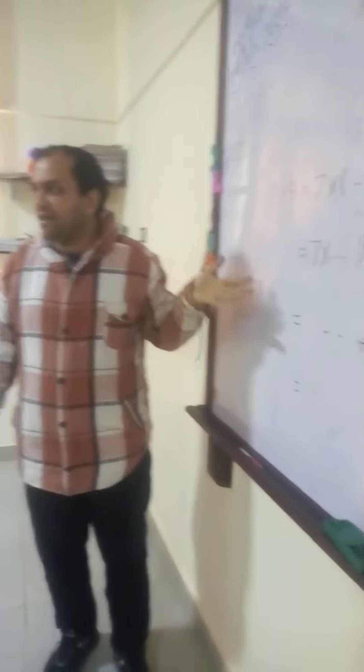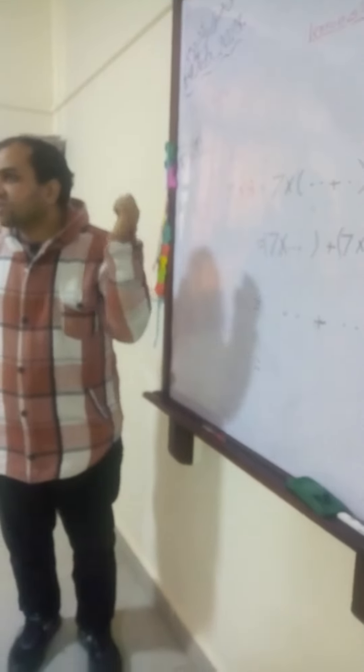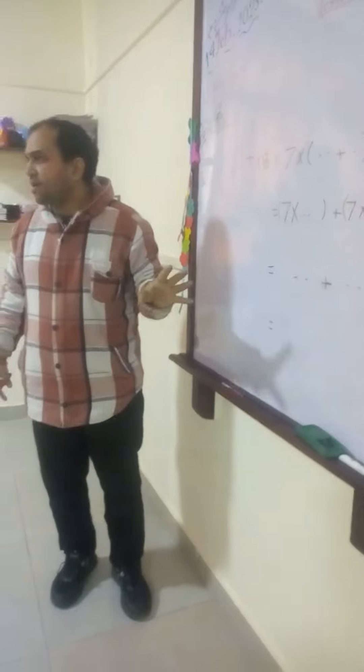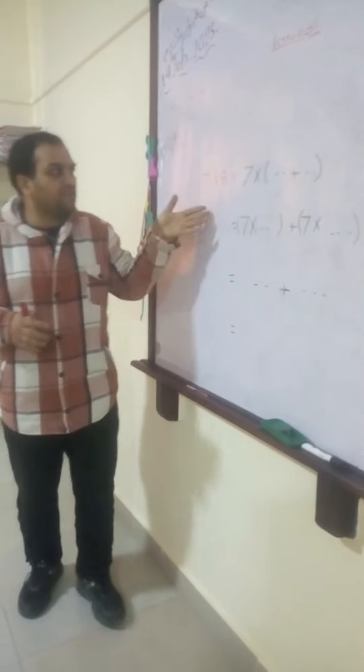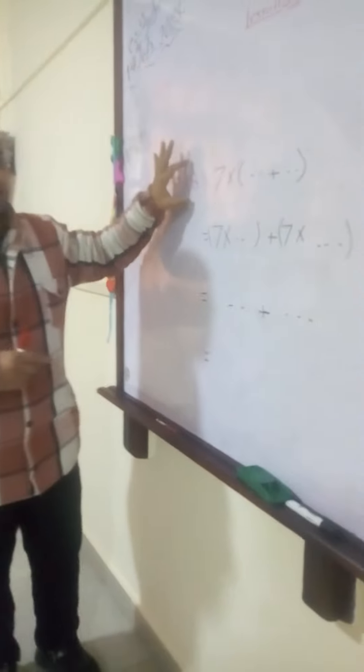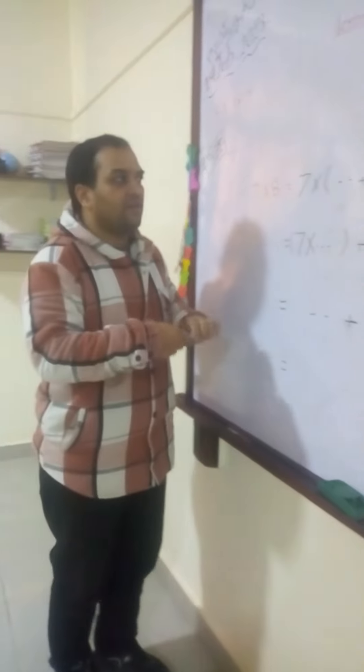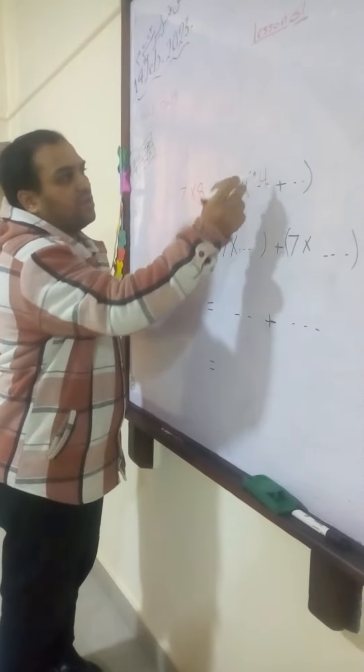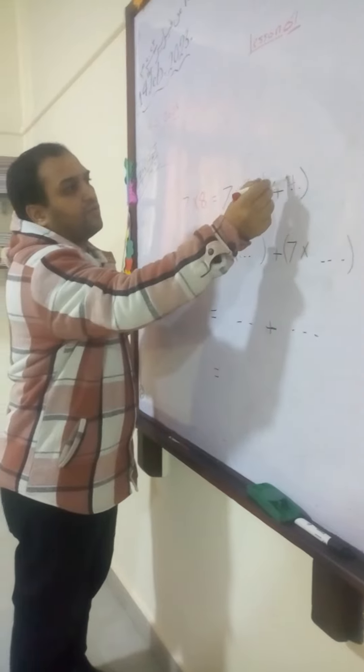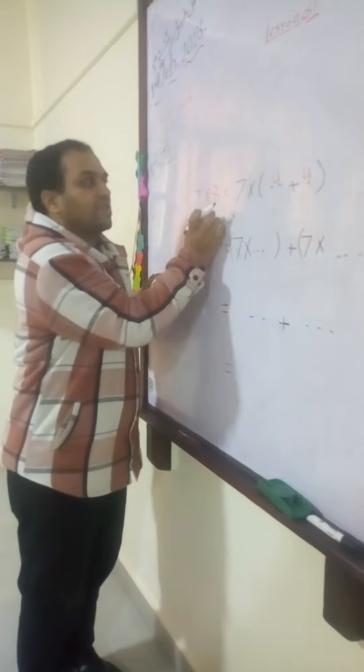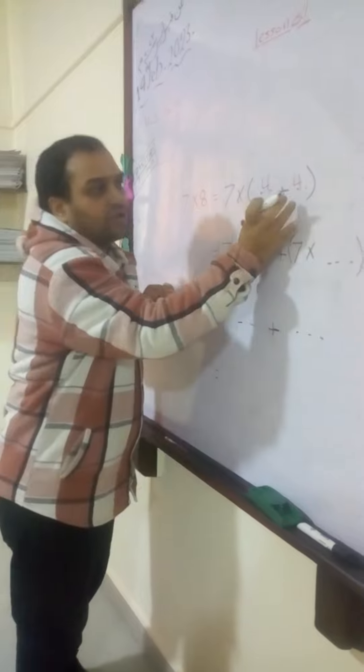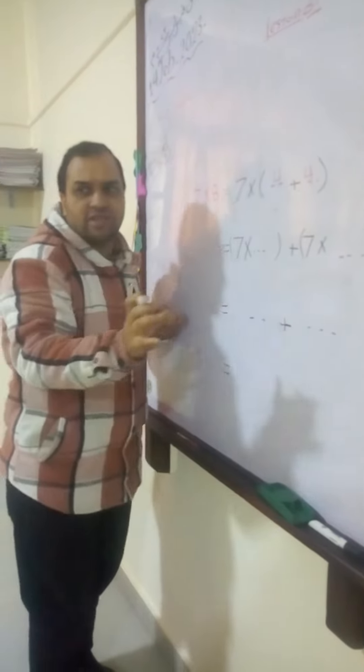Now, we will solve this example by using distributive properties. We can find the result of 7 multiplied by 8 by writing 8 as two digits, such that 4 multiplied by 7 and 4 multiplied by 7. Because we can divide 8 here into equal digits or difference, as you like.